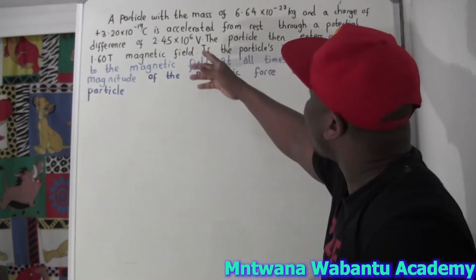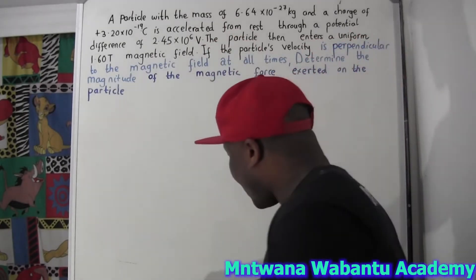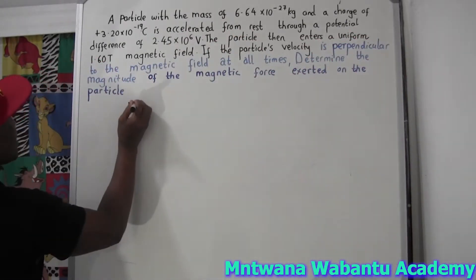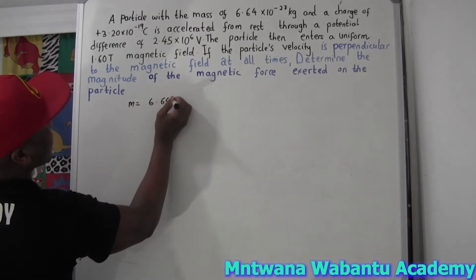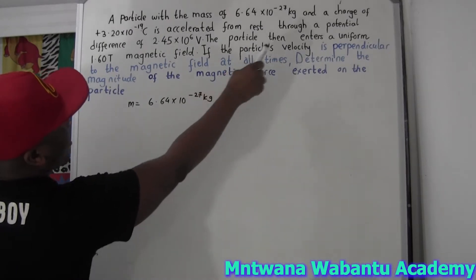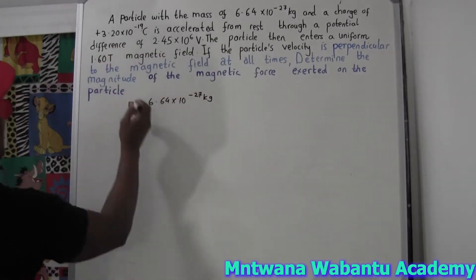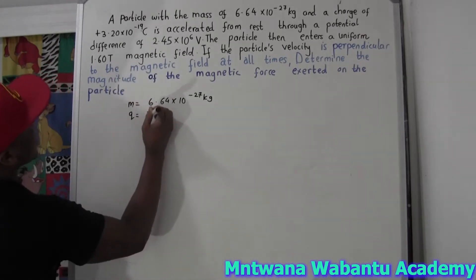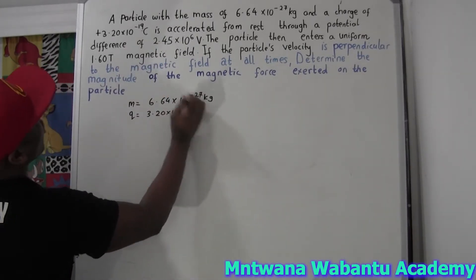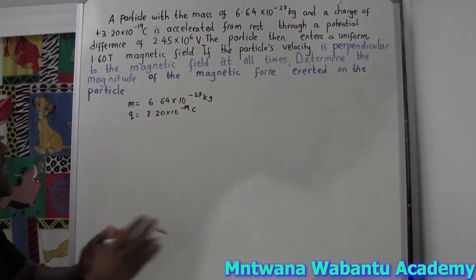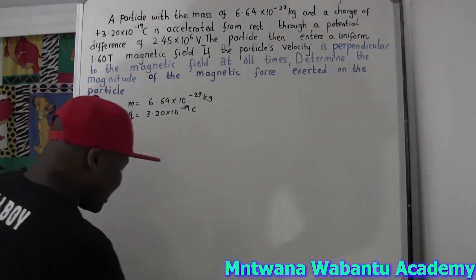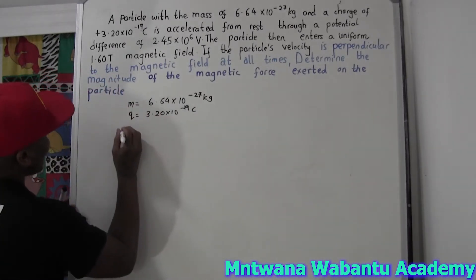So now let's look at a particle with a mass. The particle has a mass of 6.64 times 10 to the power negative — saving — kilogram. And a charge of 3.20 times 10 to the power negative 19 coulombs. It's accelerated from rest through a potential difference. This is the most possible diagram for this setup.